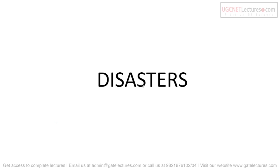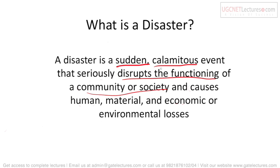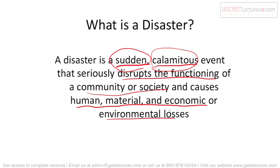The topic that we are going to do today is natural disasters. Disasters are sudden, calamitous events that seriously disrupt the functioning of a community or society. They cause human, material, economic, and environmental loss. Sudden means the disaster strikes unexpectedly, and calamitous means it can be dangerous for your life, disrupting our community, society, and environment — people's lives, money, and the environment can all be lost.